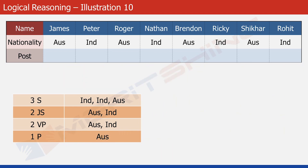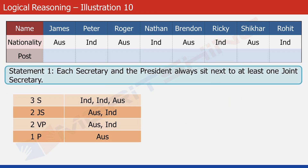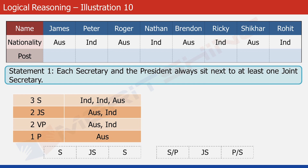Statement 1 tells us that each secretary and the president must always sit next to at least one joint secretary. There are 3 secretaries and a president — 4 people in total — and only 2 joint secretaries. The only way to arrange these 6 individuals satisfying the condition is to have one joint secretary surrounded by 2 secretaries, and the other joint secretary with the president on one side and one secretary on the other.